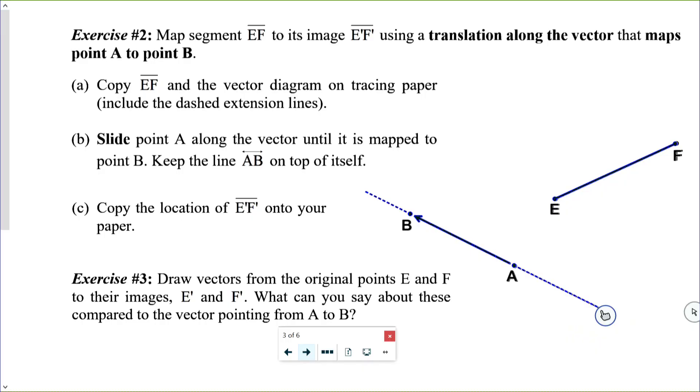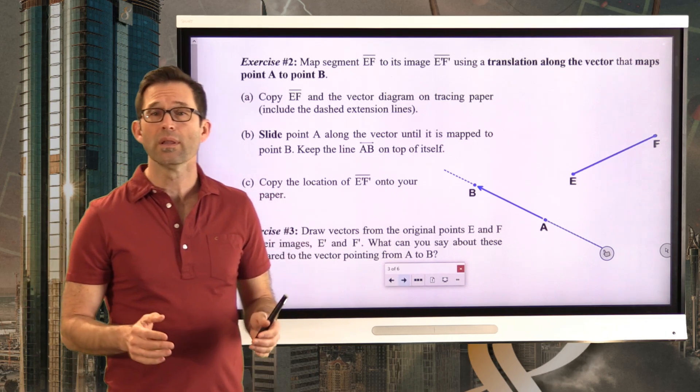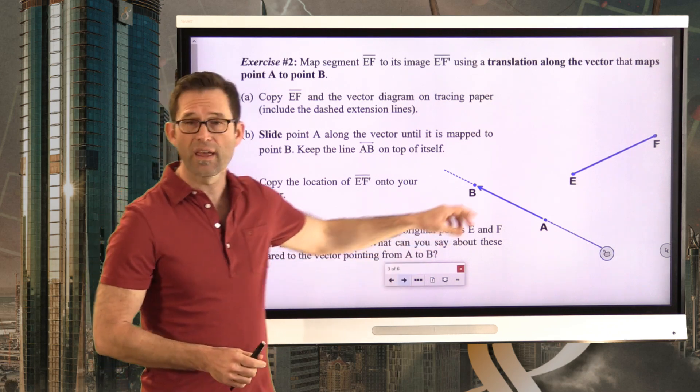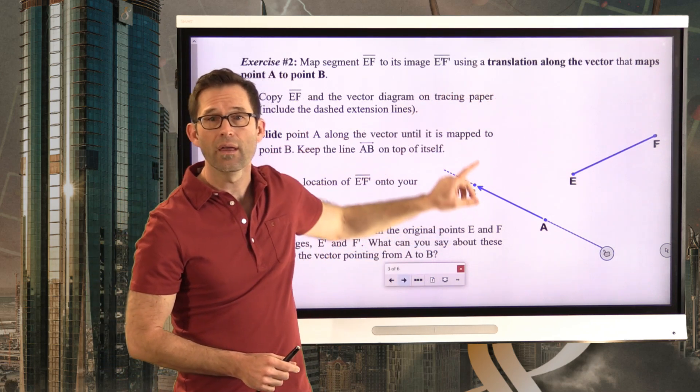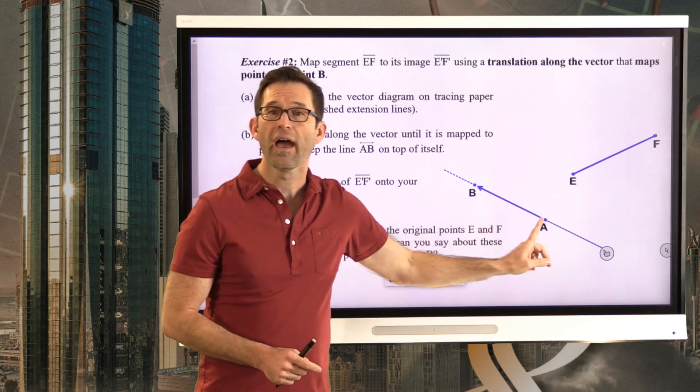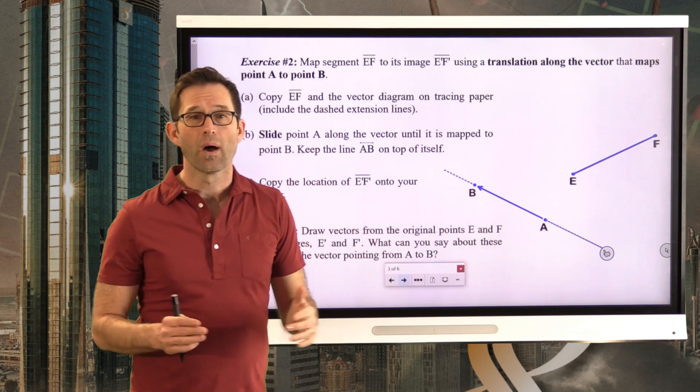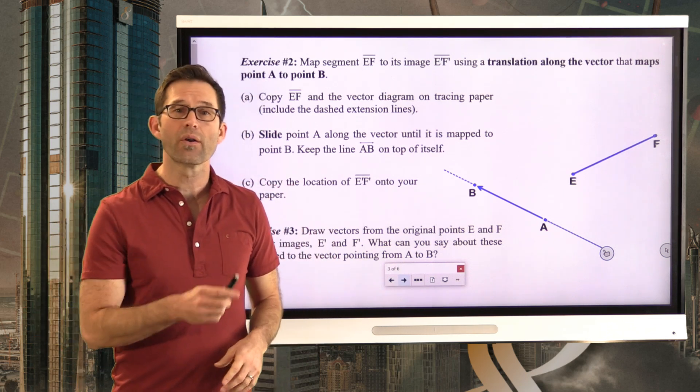Exercise number two. Map segment EF to its image E prime F prime using a translation along the vector that maps point A to point B. Here's what we mean by that. What we literally mean is that we're going to take this segment and we're going to slide it the same distance from A to B and in the same direction from A to B. So I'm going to explain how you can use tracing paper to do this.